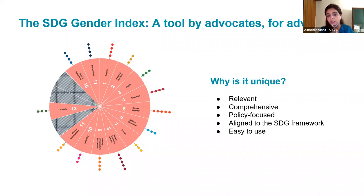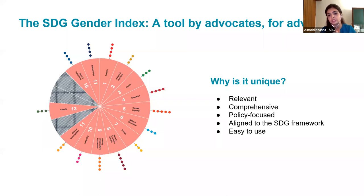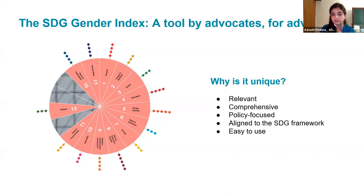These issues include both official indicators from the SDG framework and complementary indicators that capture other important dimensions of gender equality. The SDG gender index is the Equal Measures 2030 flagship tool. It was first introduced in 2019, shaped by collaboration across several partner organizations across seven countries, as well as through dialogue with thousands of other stakeholders worldwide. It's relevant, comprehensive, policy focused, aligned to the SDG framework, and very easy to use.